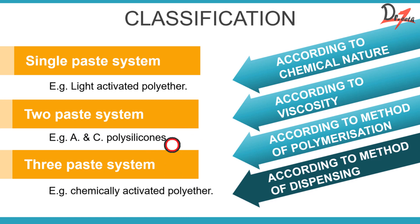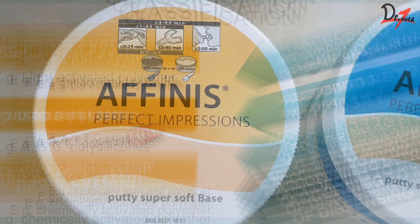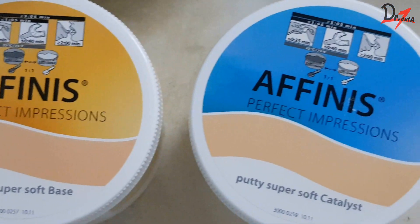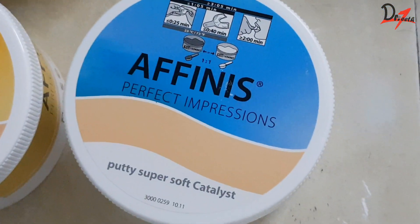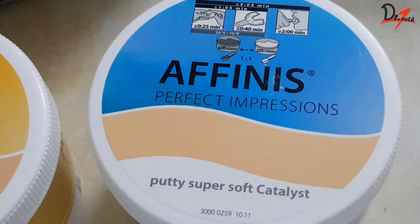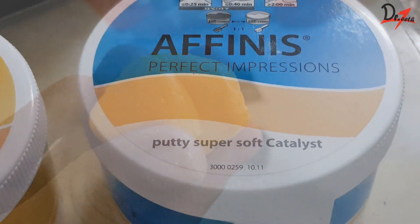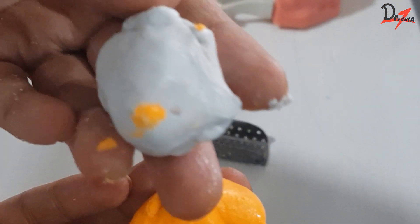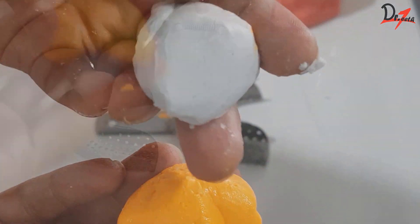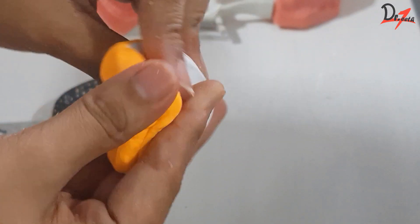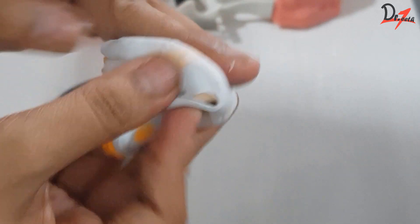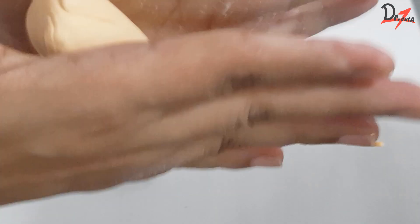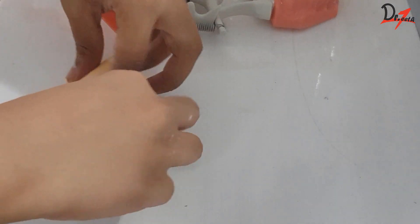Elastomers are available in different consistencies: light body, medium body, heavy body, and putty type. The putty type is available in tubs — imagine a large container of moisturizer with a putty consistency material. You take out a ball from each of two tubs, mix them properly until you get a homogeneous color with no different colors visible, then load it on the tray and take a putty impression.